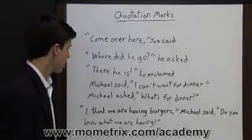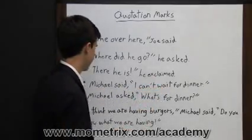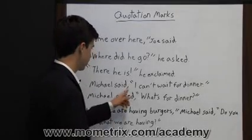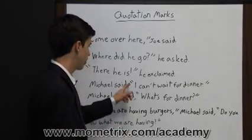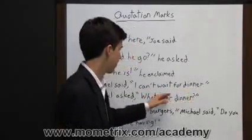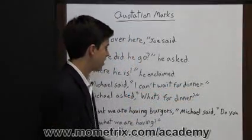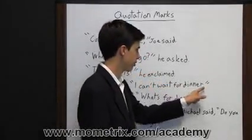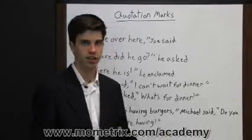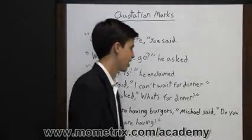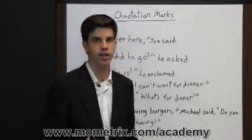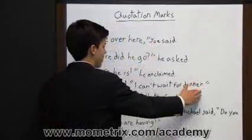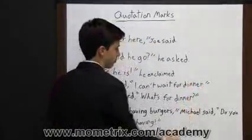These next sentences are inverted from the sentences we've been looking at because the quote comes later in the sentence. This sentence says: Michael said, 'I can't wait for dinner.' You put a comma after 'said,' open up with quotation marks, go through the sentence, and then since this sentence is declarative, it ends with a period. Up in the earlier example we ended with a comma, but here we're ending with a period because we've come to the end of the sentence, and there needs to be a period, question mark, or exclamation mark to end the sentence.